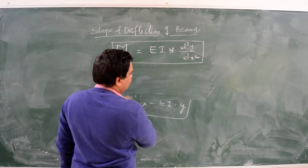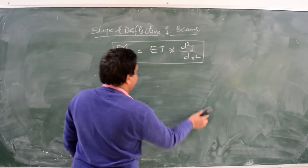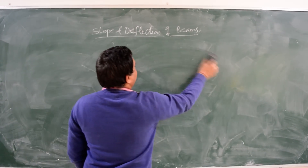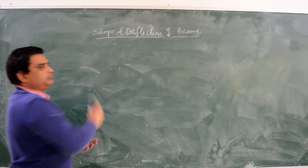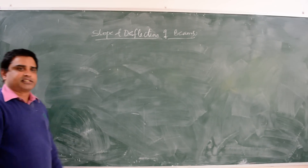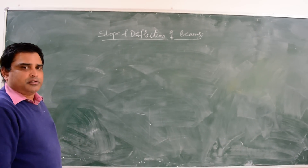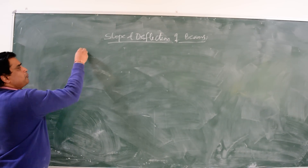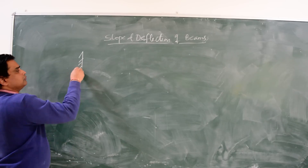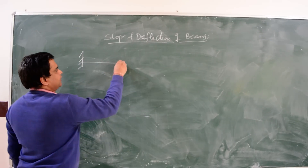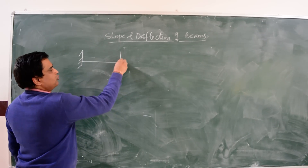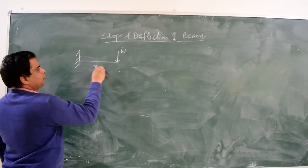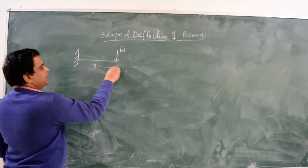Next, we will solve one simple problem: to calculate slope and deflection for a cantilever beam carrying a point load at the free end, using the double integration method.